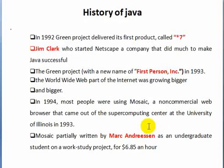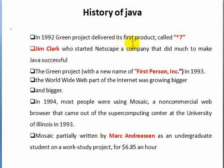In 1992, the Green Project delivered its first product called Star 7. The Green Project produced a working product.